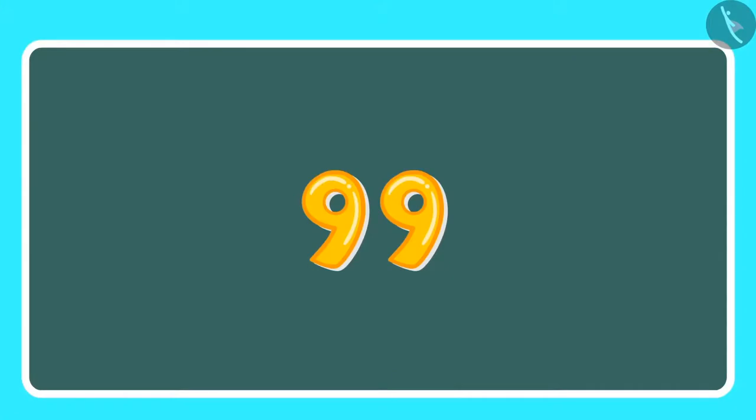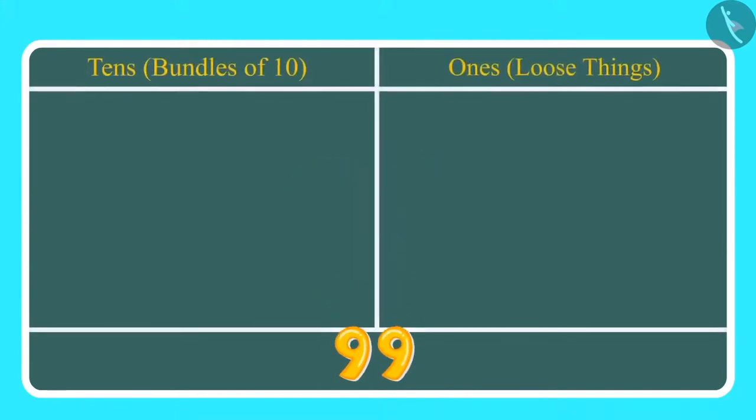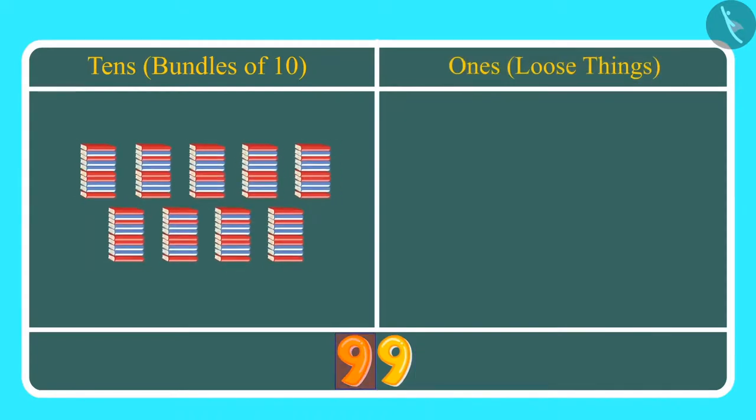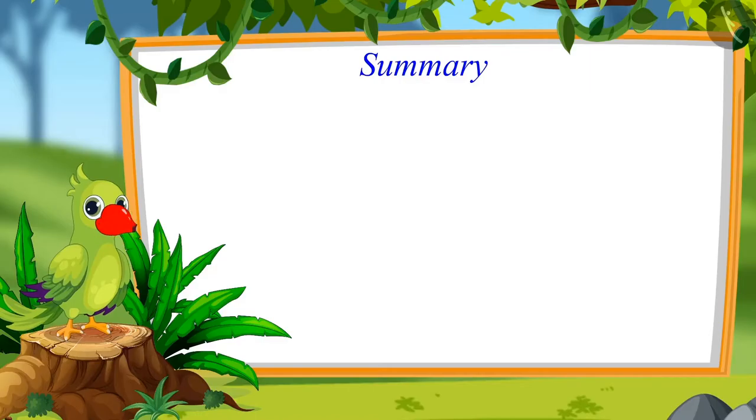Children, this means they have 99 books all together. We write 99 like this. And here, 9 is at tens place and 9 is at ones place. So, that means we have 9 tens, which we can also call 9 bundles of 10. And along with that, 9 ones.